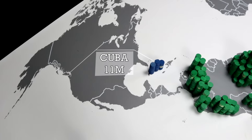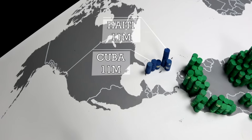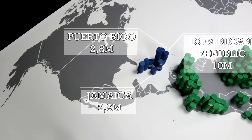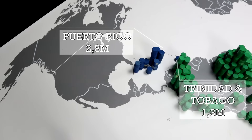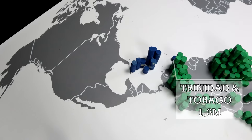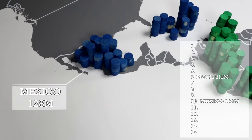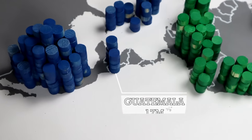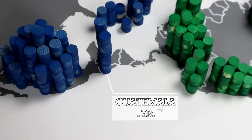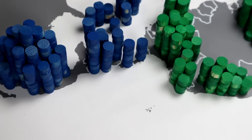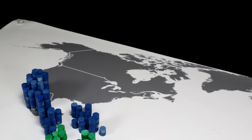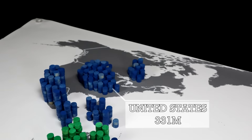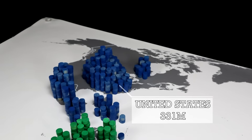In North America, Central America, and the Caribbean, 592 million — 7.6 percent of the world's population — live. Cuba, the Dominican Republic, and Haiti all have slightly over 10 million inhabitants, while Jamaica and the US territory of Puerto Rico have just under 3 million each. Trinidad and Tobago has 1.3 million. In Central America, Mexico is the largest nation with 128 million inhabitants, making it the 10th most populous nation in the world. Guatemala is the second largest at 17 million, while Costa Rica, El Salvador, Honduras, Nicaragua, and Panama all have between 4 and 9 million. Canada reaches 37 million, with the United States having over 330 million — the largest nation on the American continent and the third largest in the world.